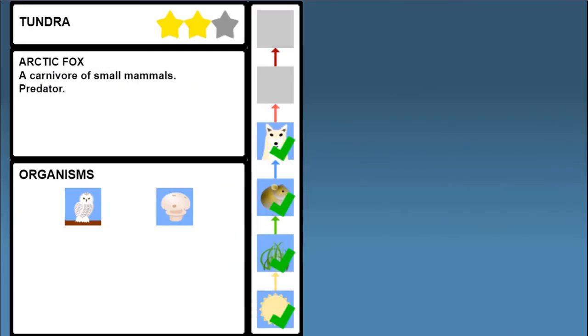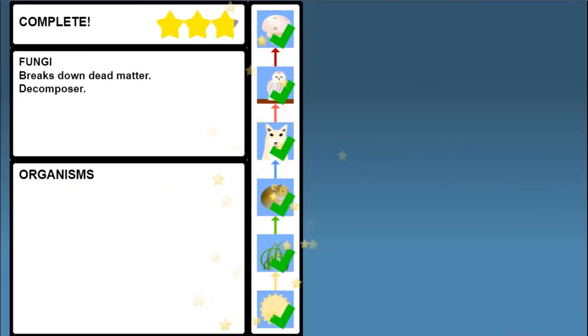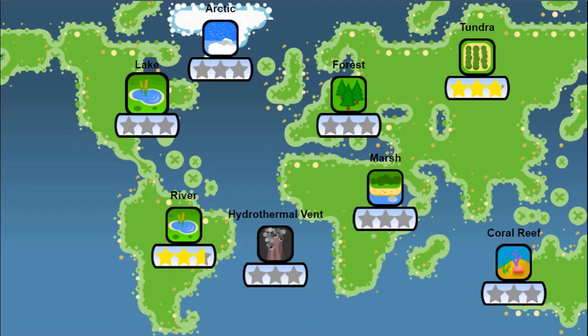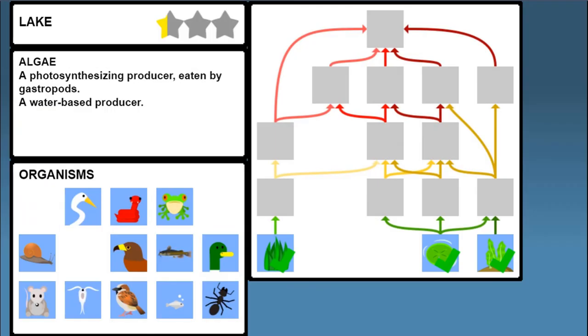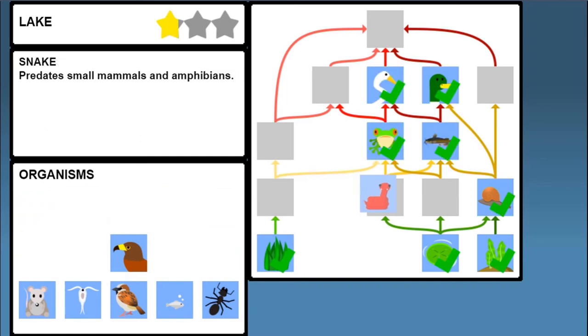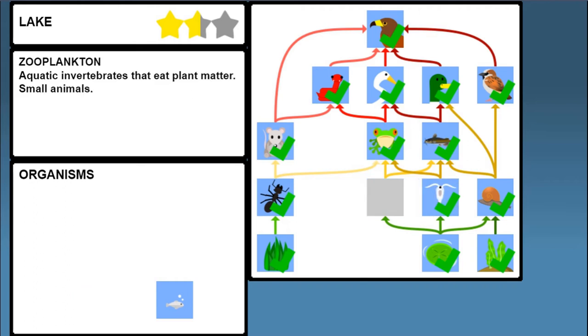In each ecosystem you will have to reconstruct a specific food chain or food web by dragging and dropping the correct icons into their correct slots. There are eight different ecosystem locations on the map that you can visit.